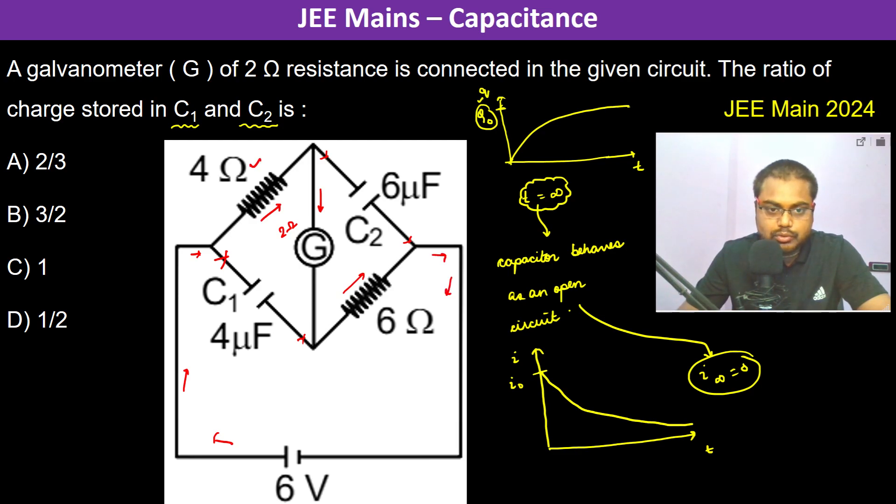These four ohm, two ohm, and six ohm resistances are in series. So 4 plus 2 is 6, 6 plus 6 is 12 ohms. Therefore the current flowing is 6 volts divided by 12 ohms which is 0.5 ampere.